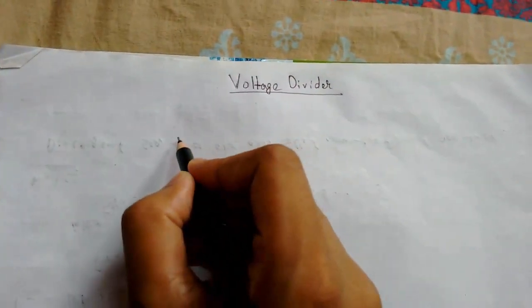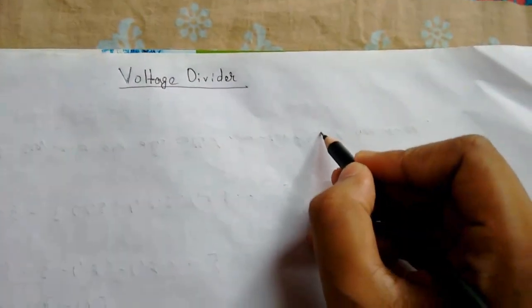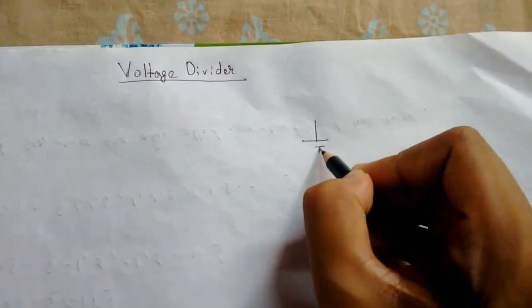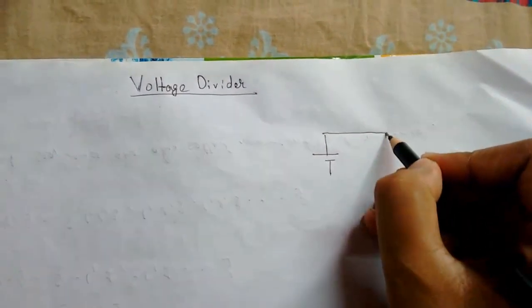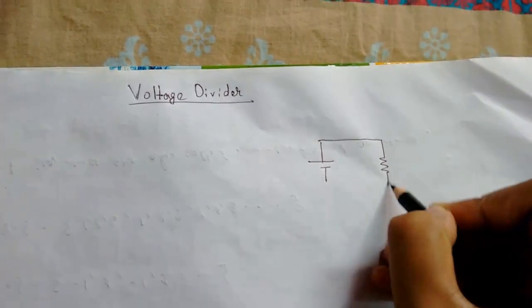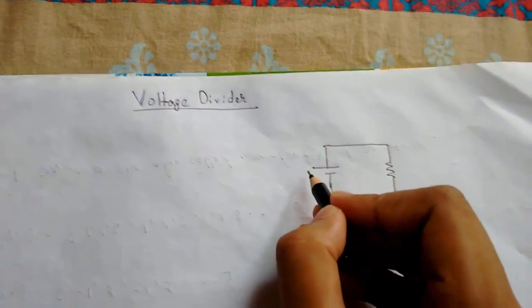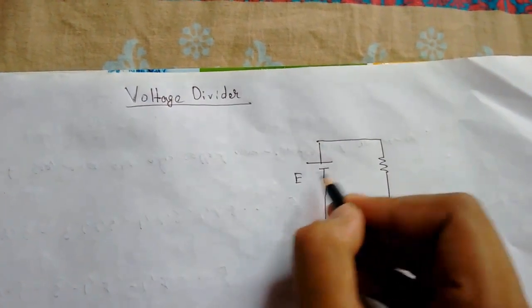Let us see how we'll do that. Suppose we have a battery and we have resistances R1 and this will be our resistance R2. This is supposed to, let us take E.